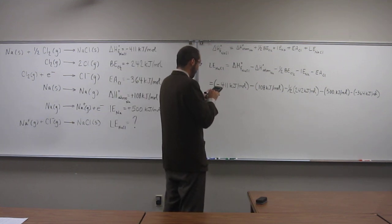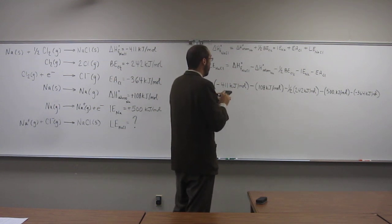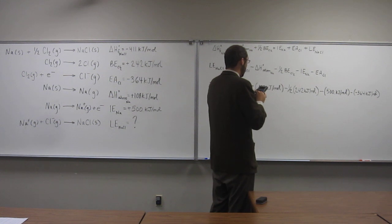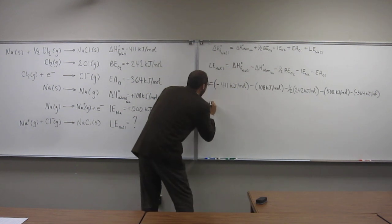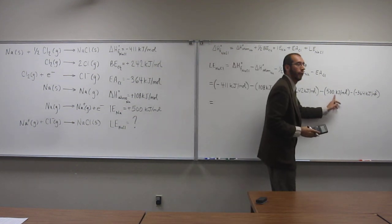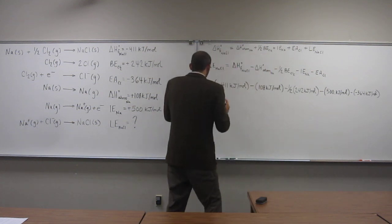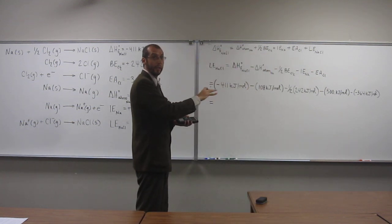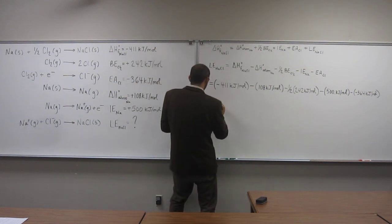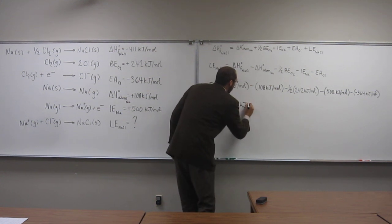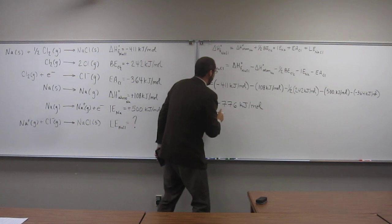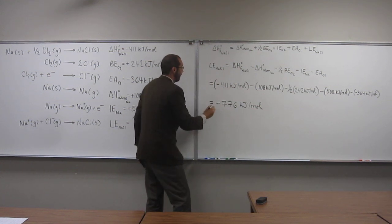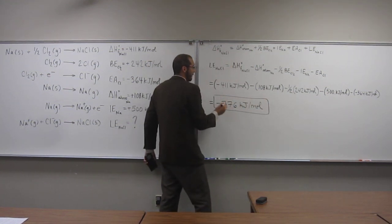So negative 411 minus 108 minus 121 minus 500 plus 364, and I got a number. So there's a decimal point there, I don't know if you can see that, but this would be to three digits or to that decimal. So I get a number negative 776 kilojoules per mole. Notice the negative sign there, that tells me that it's an exothermic process as you would have expected.